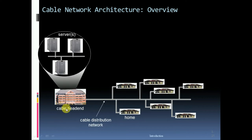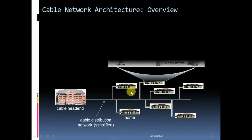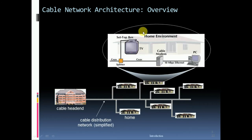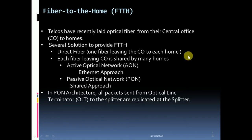This is the cable headend, and these are the home networks. Cable is distributed through the network to each home. Here is an example of one home where all devices use the internet. The cable modem receives a coaxial wire — one wire goes to the TV and the other to the PC.